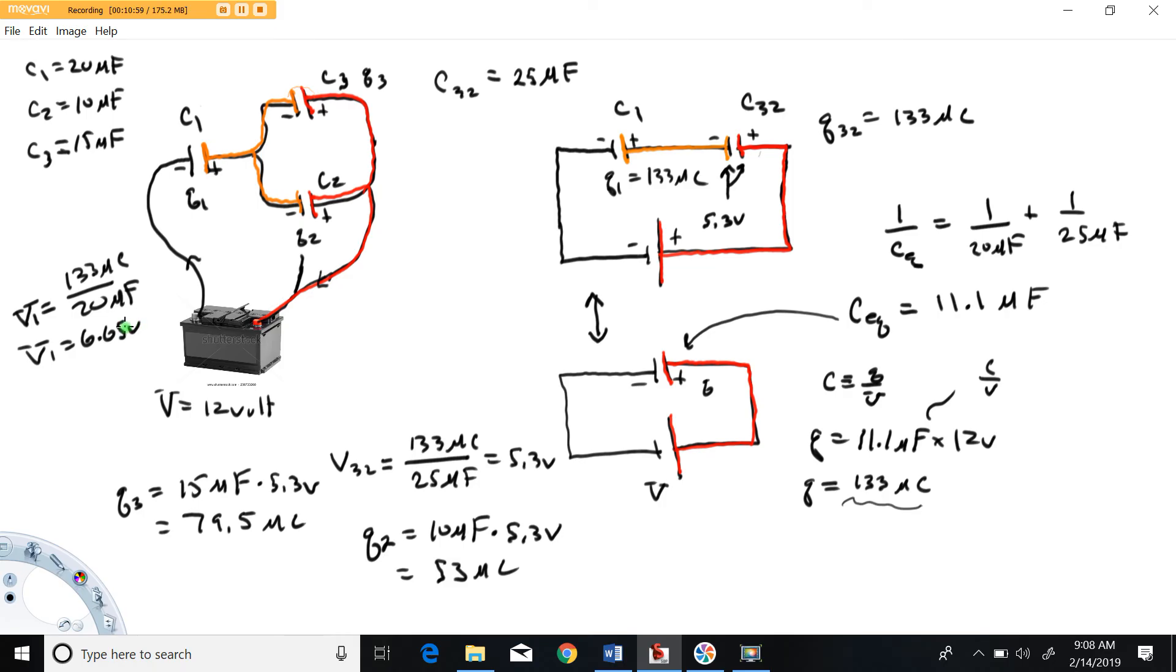Quick check against our work. Our voltage from black to orange plus the voltage from orange to red should equal the voltage from black to red. Would somebody please add 6.65 to 5.3. 11.95. Yeah so we got 11.95 volts when we add black to orange and orange to red which is approximately 12, rounded to three significant figures is 12.